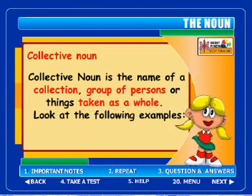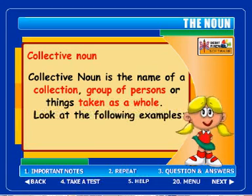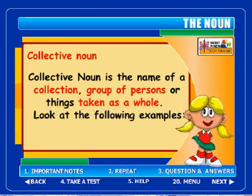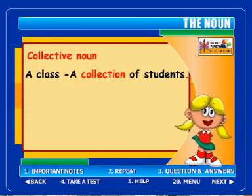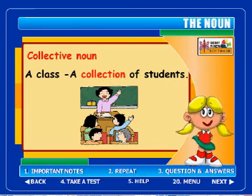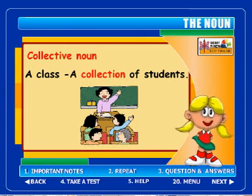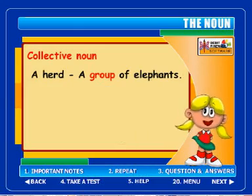A collective noun is the name of a collection or group of persons or things taken as a whole. Look at the four examples: a class — a collection of students; a herd...